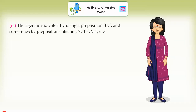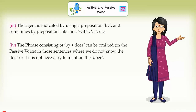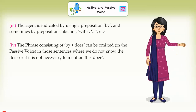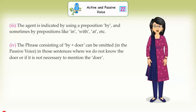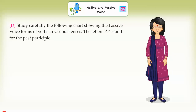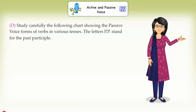The phrase consisting of 'by' plus doer can be omitted in the passive voice in those sentences where we do not know the doer or if it is not necessary to mention the doer. Modal auxiliary plus base/root form of the main verb in the active voice becomes modal plus 'be' plus past participle form of the main verb in the passive voice. Study carefully the following chart showing the passive voice forms of verbs in various tenses. The letters PP stand for past participle.